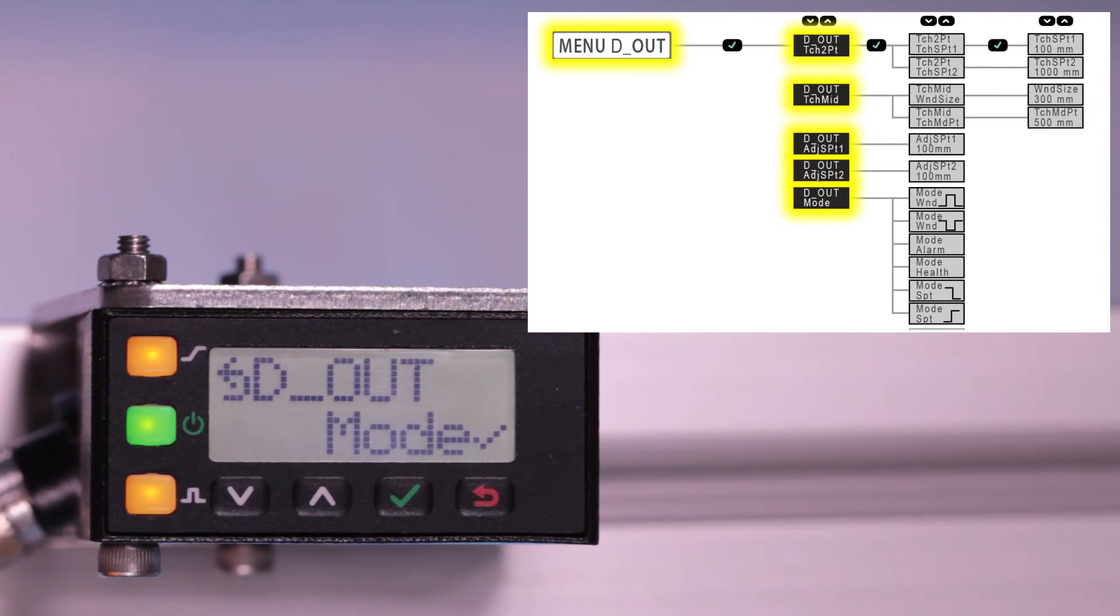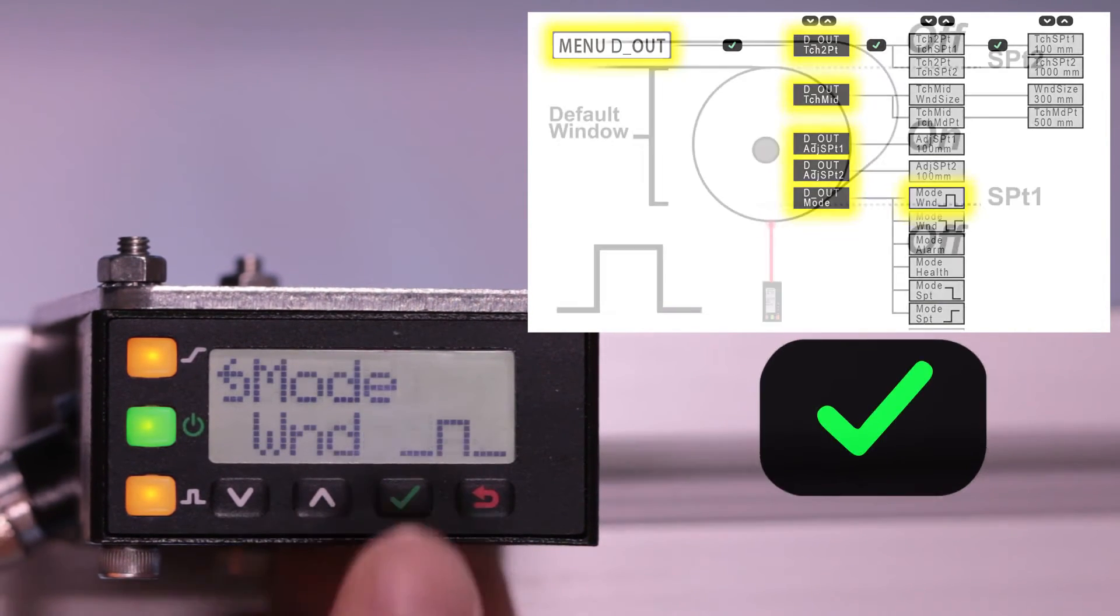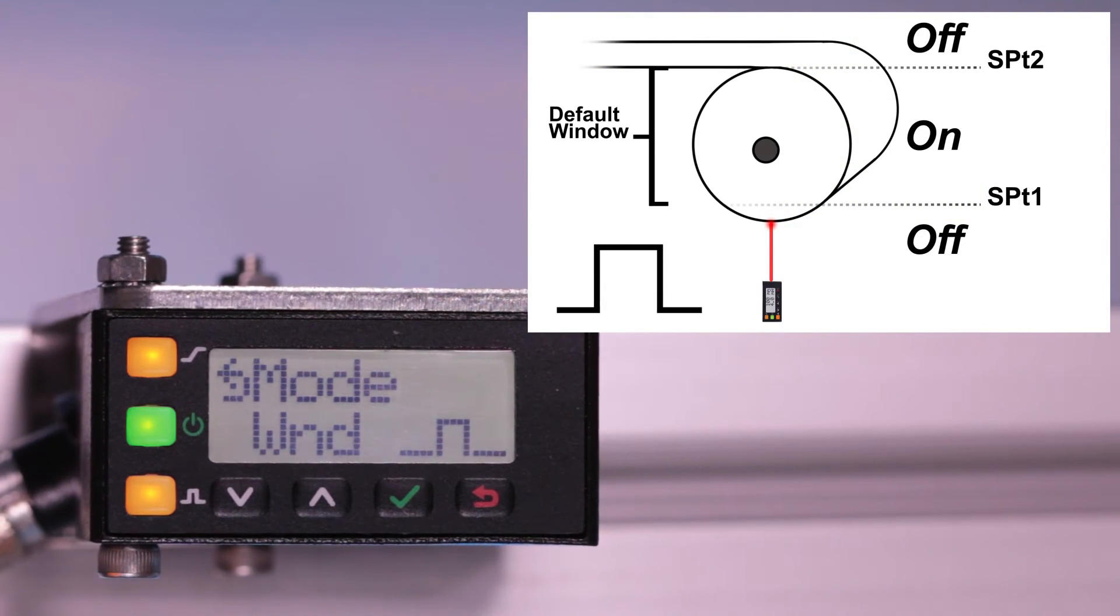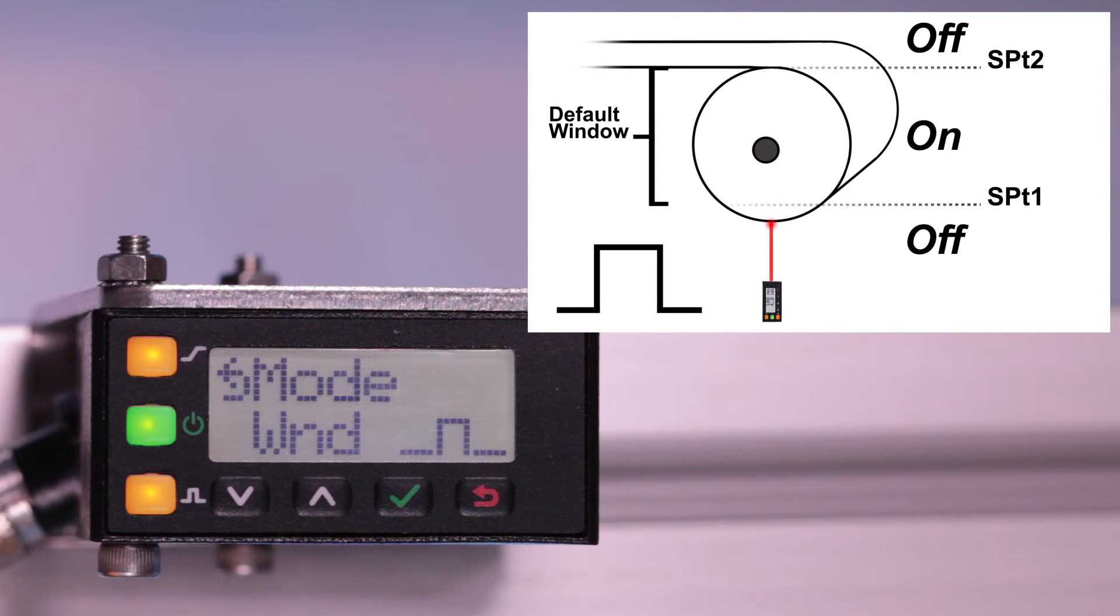Click enter to access the mode options. The default discrete output setting is a normally closed window where the output is on when a target is located between the two switch points.